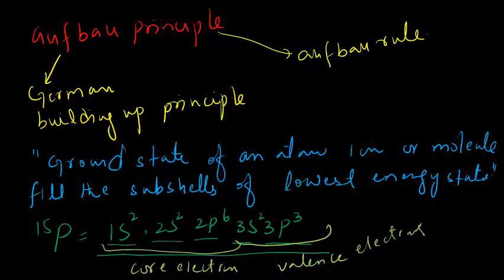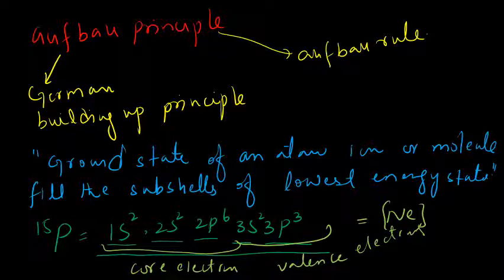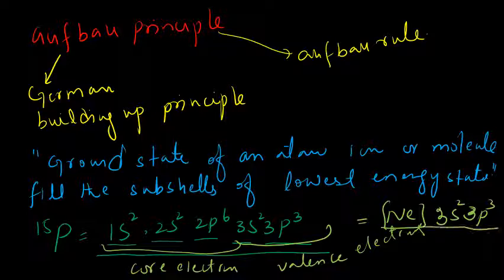We can replace the core electrons with the symbol of the nearest noble gas. For phosphorus, we can write it as [Ne] 3s² 3p³, where [Ne] represents the inner electrons 1s², 2s², and 2p⁶ — these are the core electrons which match the electronic configuration of the noble gas neon.